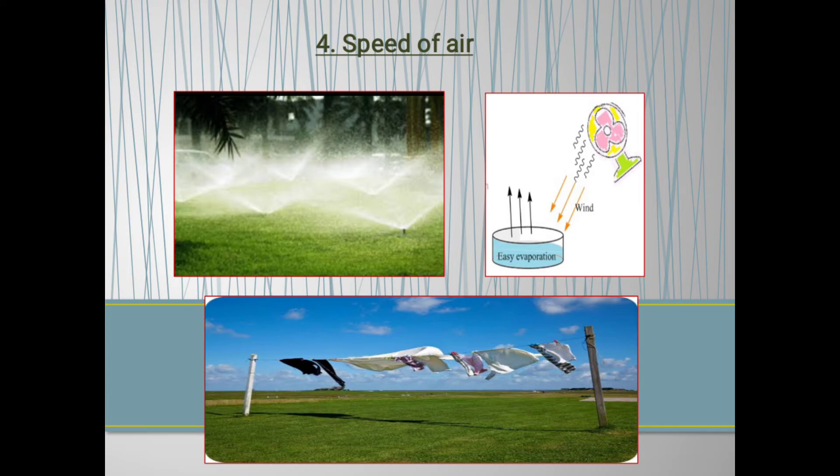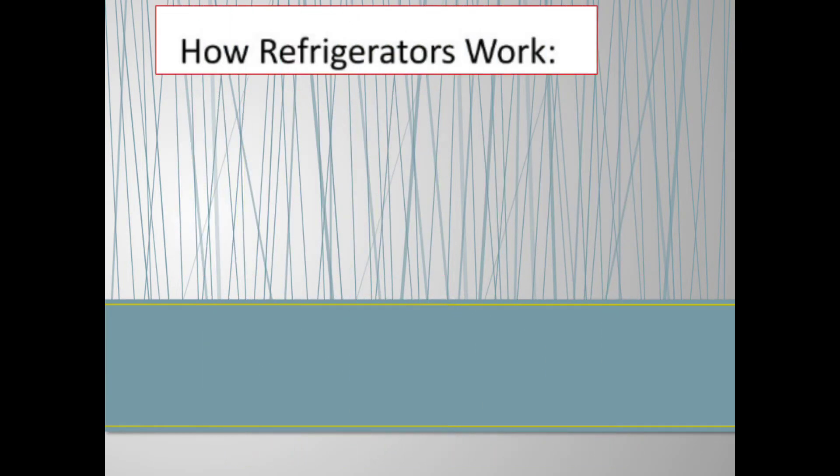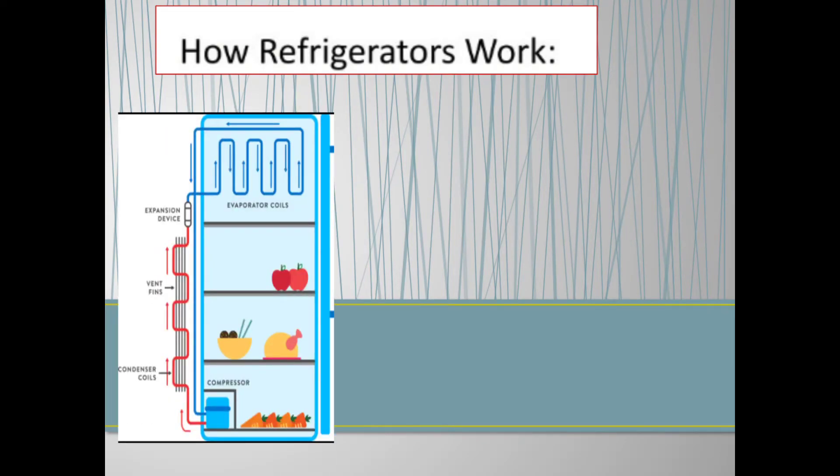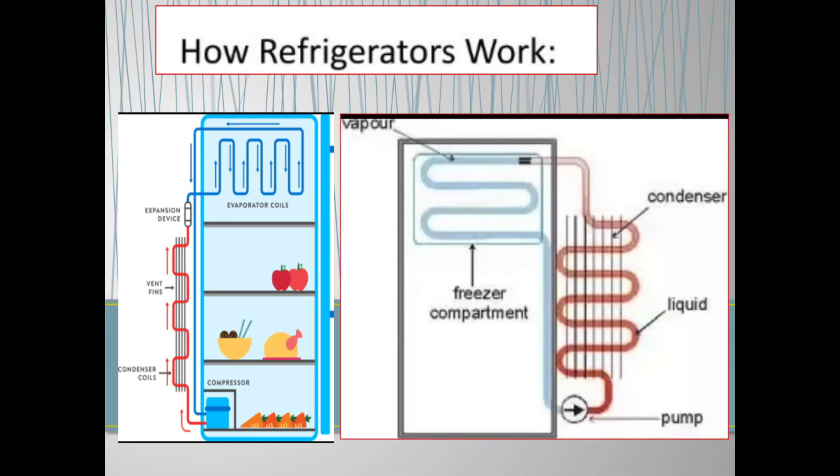Now we will talk about how refrigerators work. The coolant produced by rapid evaporation of a liquid keeps the food cool in the refrigerator. And see the diagram. Refrigerator contains a freezer, chamber, electrical pump and condenser.